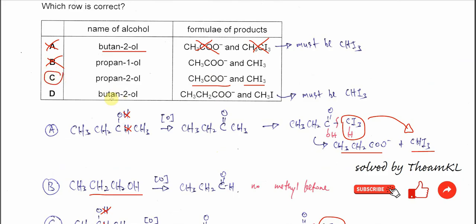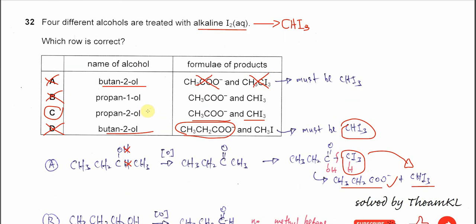For butane-2-ol, I already discussed in D. So this one is correct, this salt will be produced. But if you look carefully this one is wrong. It's CH3I, but it must be CHI3. So D also is wrong. The answer is C.